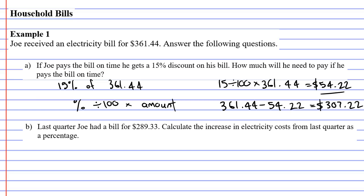We'll move on to question B now. It says last quarter Joe had a bill for $289.33, and it wants you to calculate the increase in electricity costs from last quarter as a percentage.